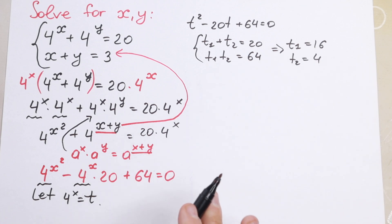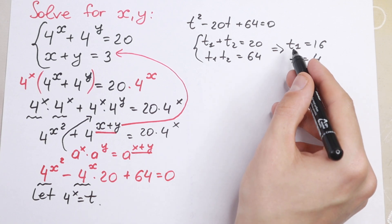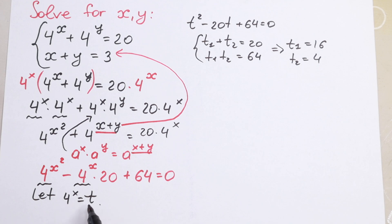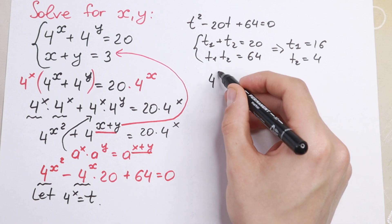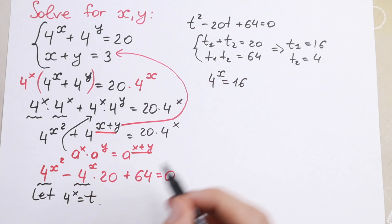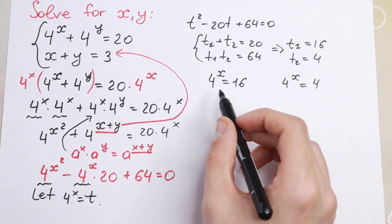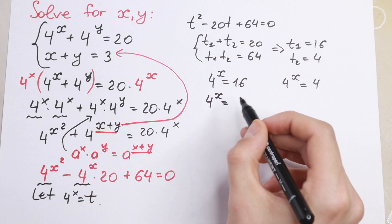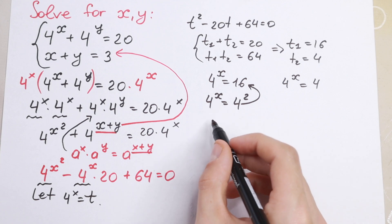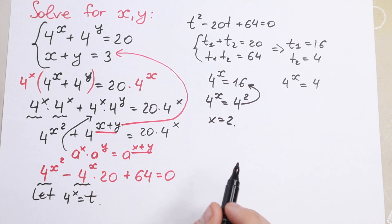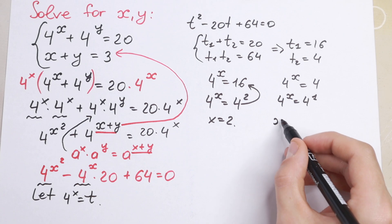Both roots are valid since 4 to the power x can equal either value, giving us two equations. For 4 to the power x equal to 16: since 4 squared equals 16, we get x equal to 2. For 4 to the power x equal to 4, which is 4 to the first power, we get x equal to 1.